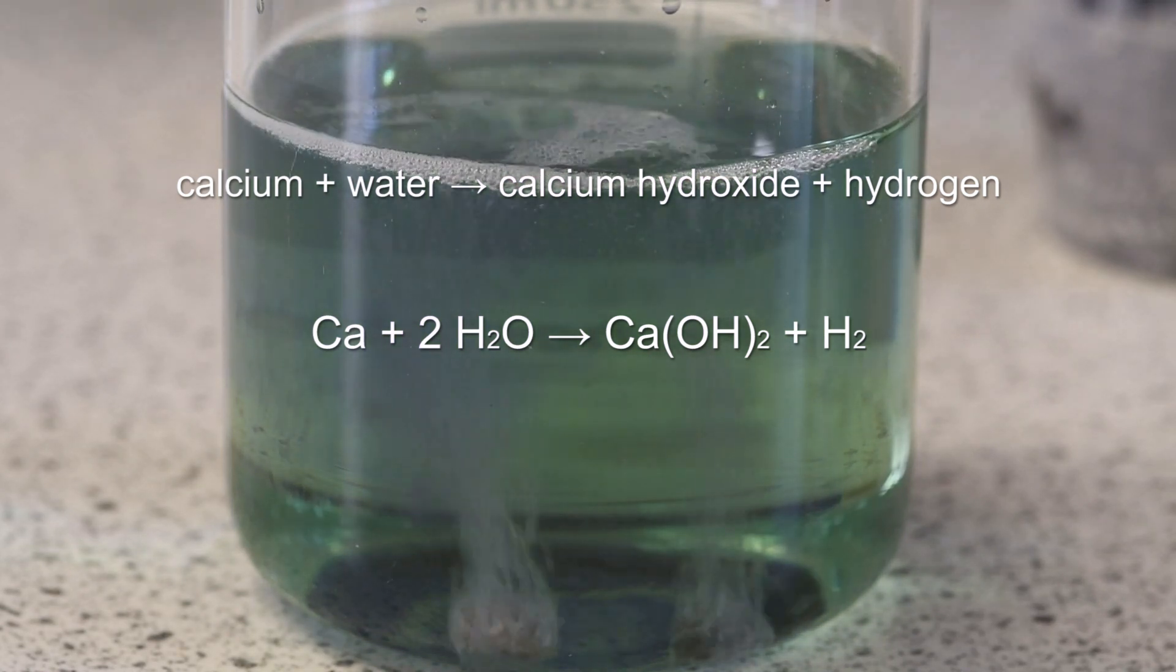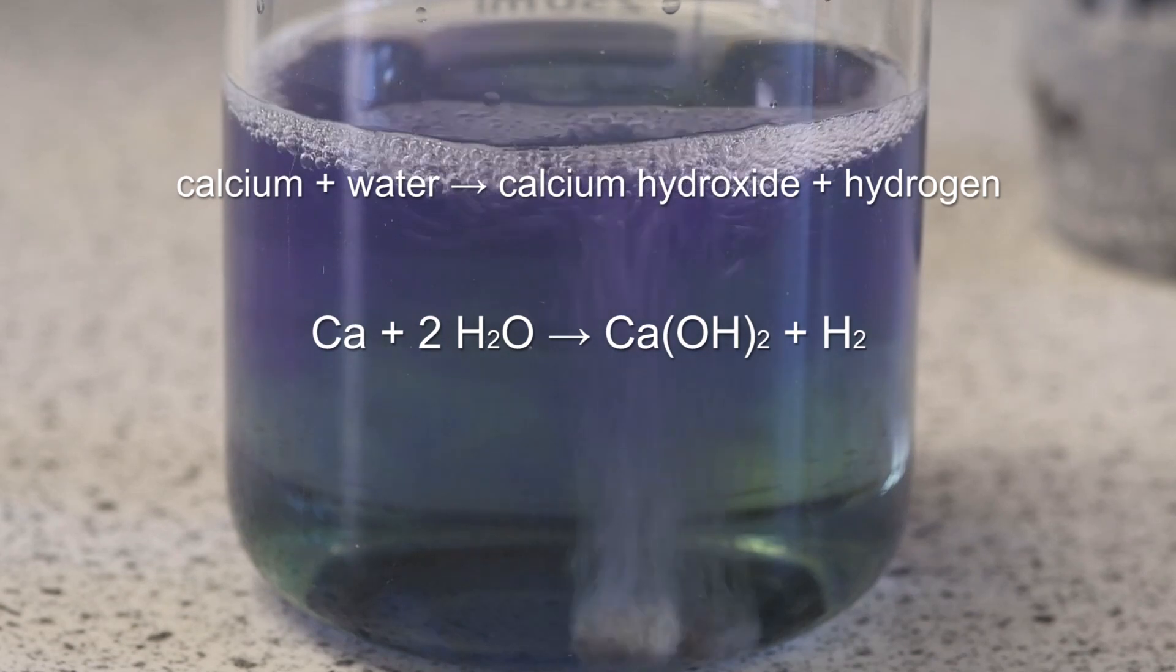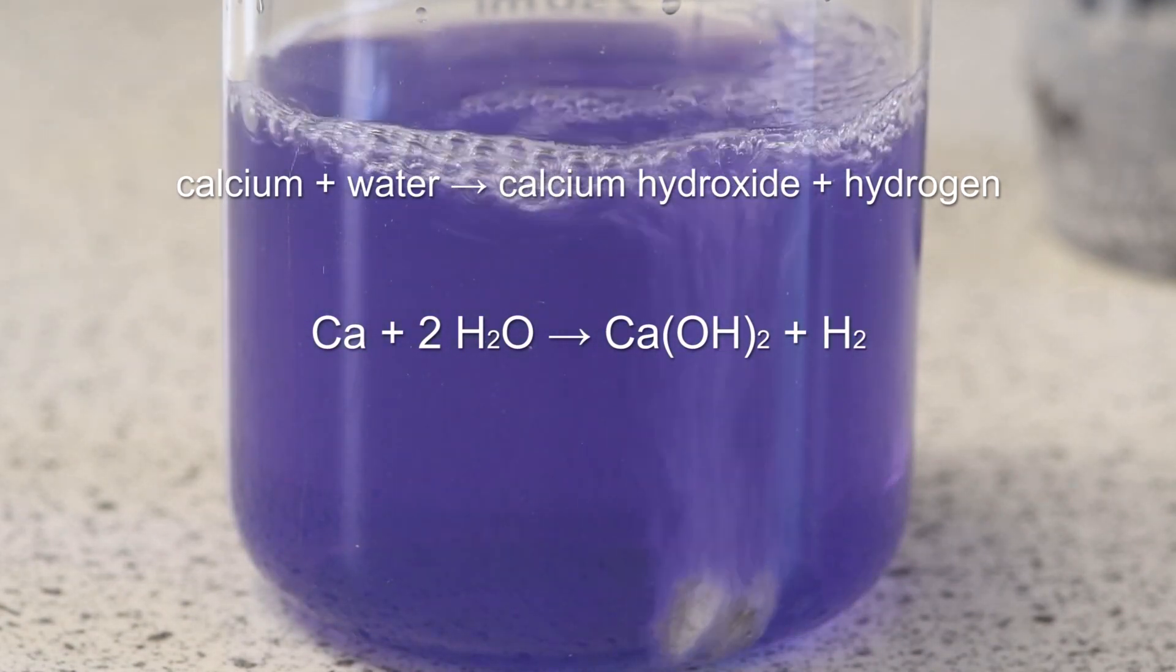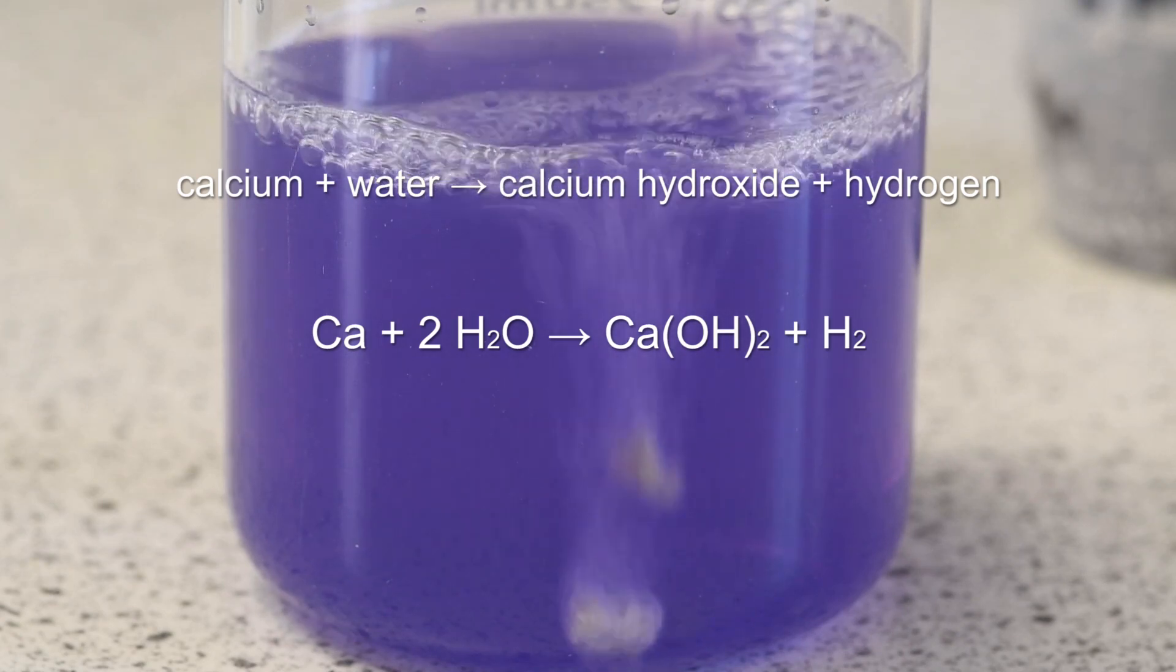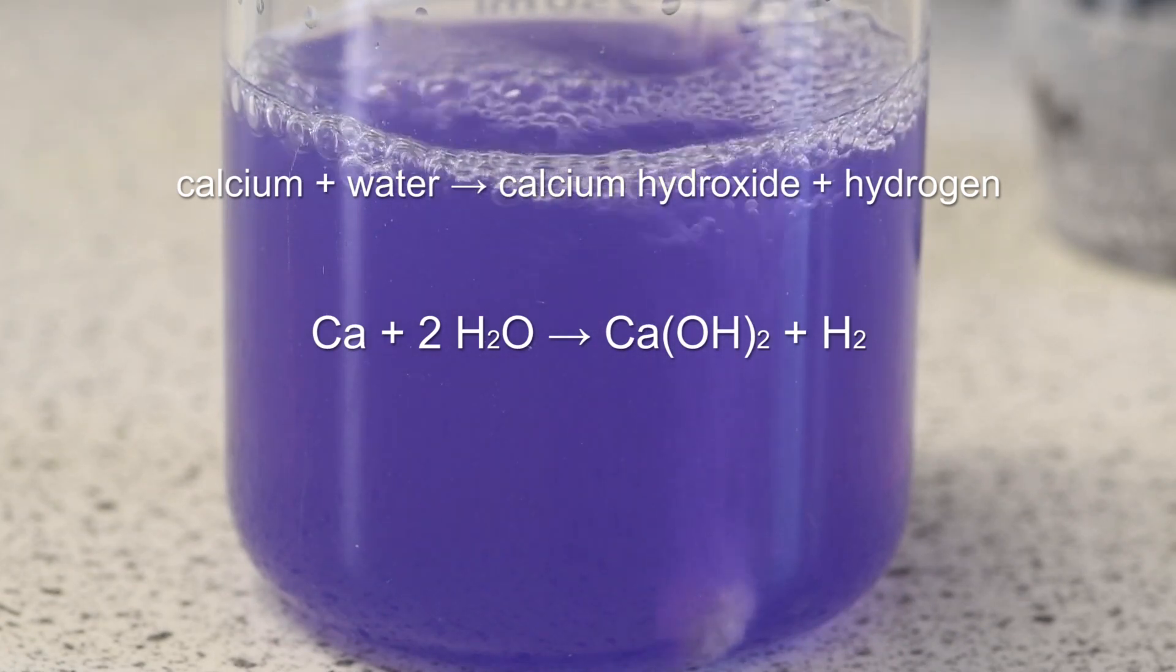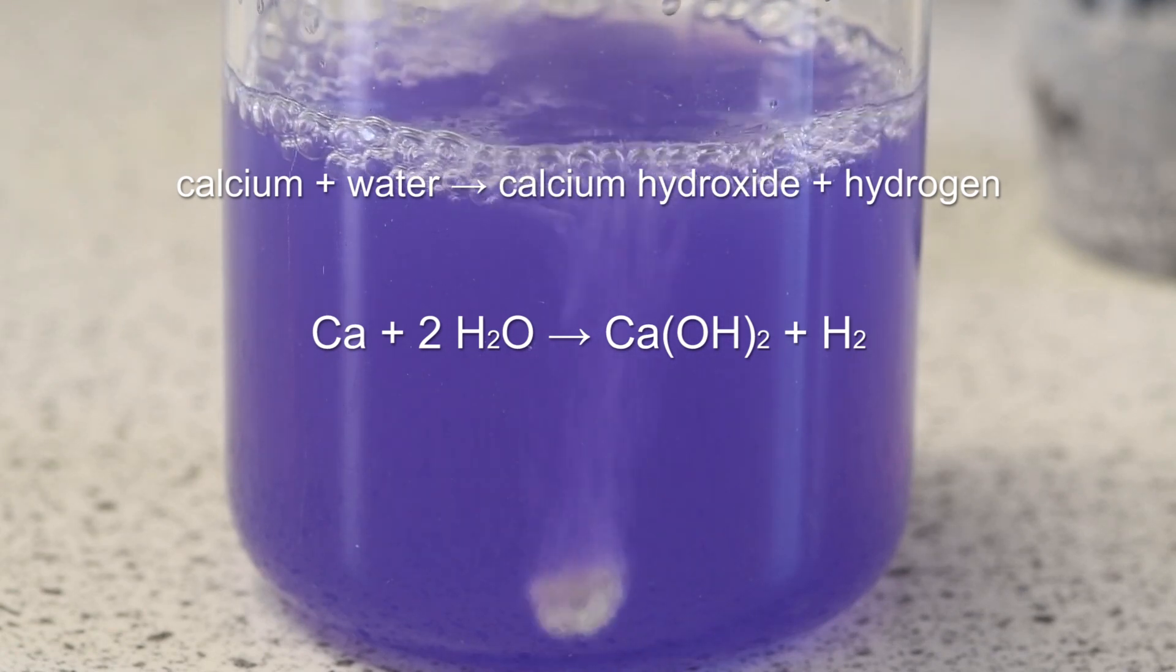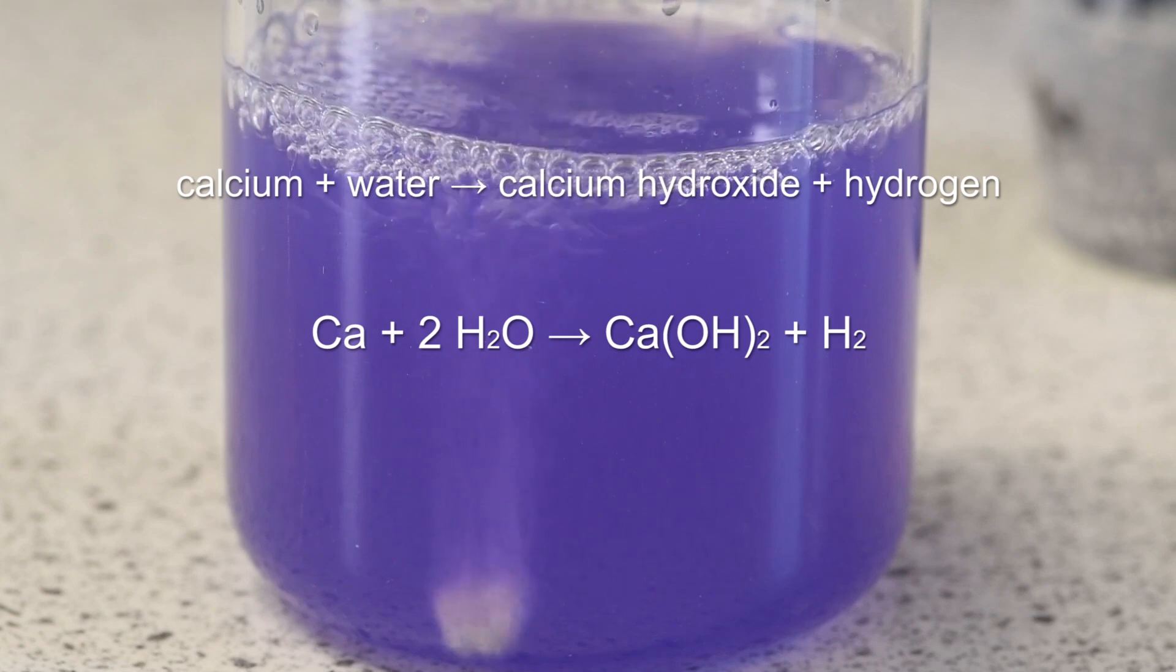It's also producing calcium hydroxide, so you can see the indicator color changing there from green to purple. The other thing that you'll notice in there is that because calcium hydroxide is not very soluble, the mixture is going quite cloudy as well as it reacts.